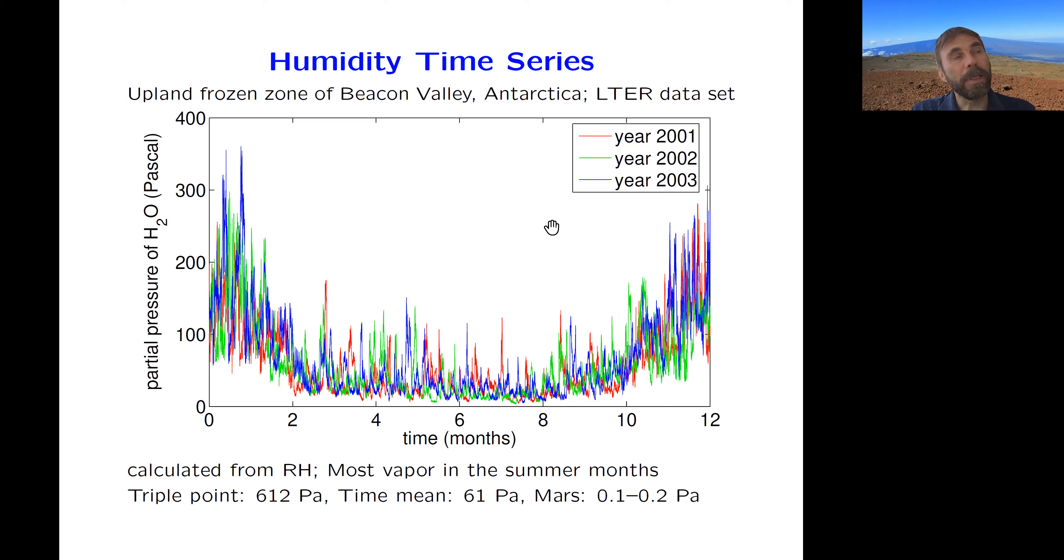And so I want to develop some more on this point of how can you have an ice-free surface in equilibrium with a permanent ice table. And so to do that, this is a time series from that meteorological station I showed earlier in Beacon Valley in Antarctica and in southern summer. The partial pressure gets very high, so there's a lot of humidity in the atmosphere in southern summer, but it's also warmer.